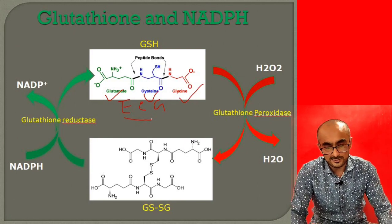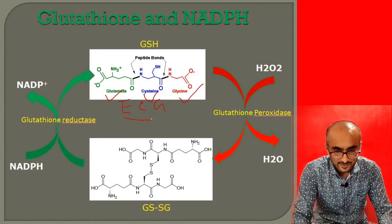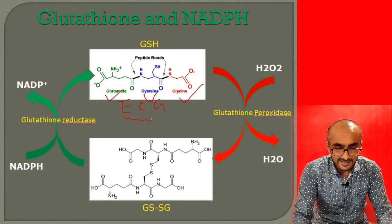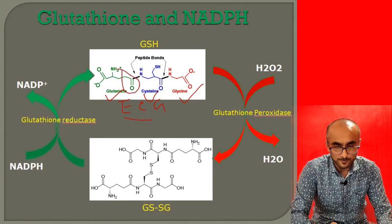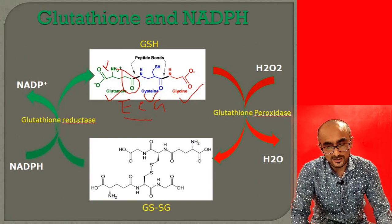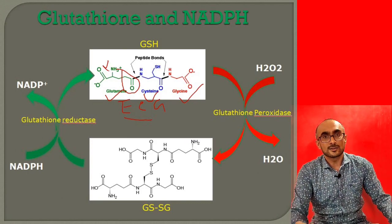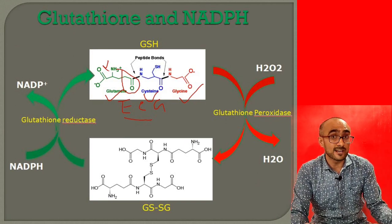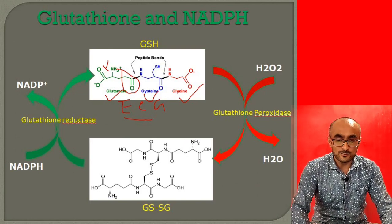A unique feature of this peptide is that the first amino acid, glutamate, forms a peptide linkage with cysteine through its side chain carboxylic group rather than through the alpha-carboxylic group. Normally, the alpha-amino group reacts with the alpha-carboxylic group of another amino acid to form a peptide bond. But here the side chain of glutamic acid is involved in peptide bond formation — this is an example of an isopeptide bond.